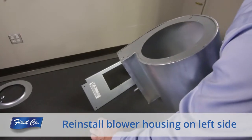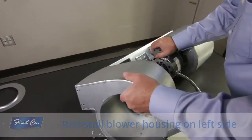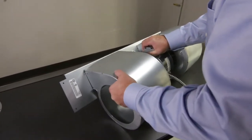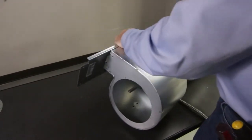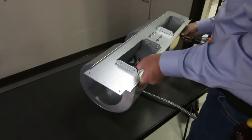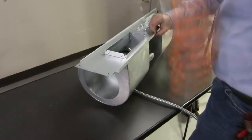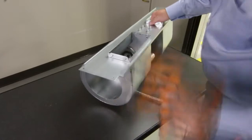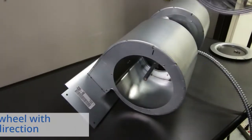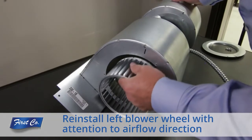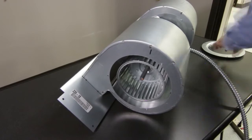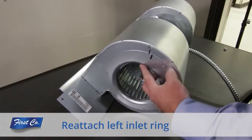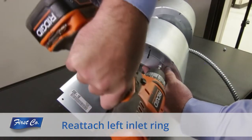Reinstall the blower housing on the left side that you removed earlier. Reinstall the left blower wheel paying attention to the airflow direction. Reattach the inlet ring lining up the reference marks you made earlier.